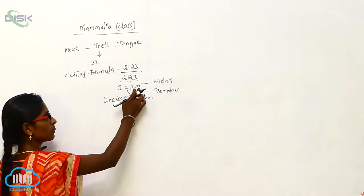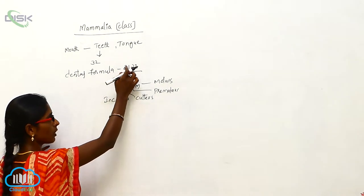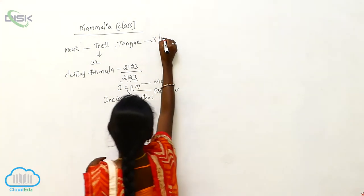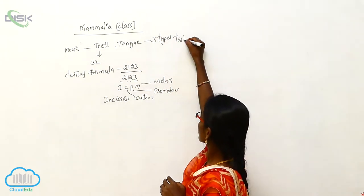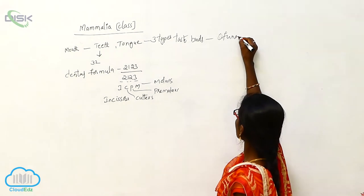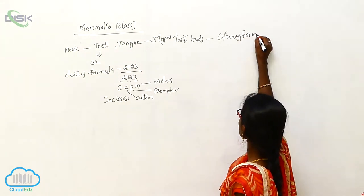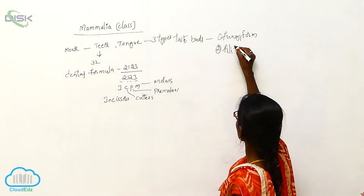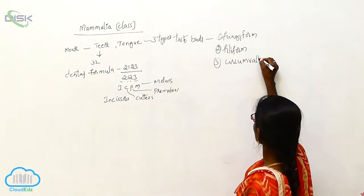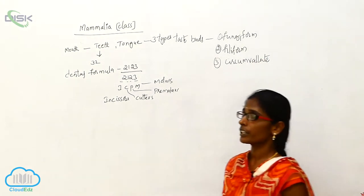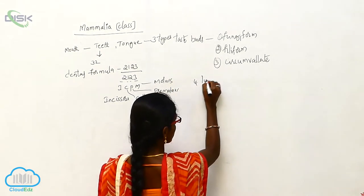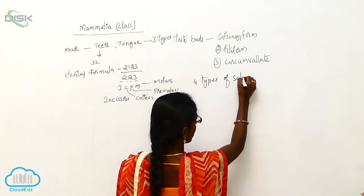So based on the ICPM, the dental formula will be derived. Tongue has three types of taste buds: fungiform, filiform, and circumvallate. These are the three types of taste buds and has four types of salivary glands.